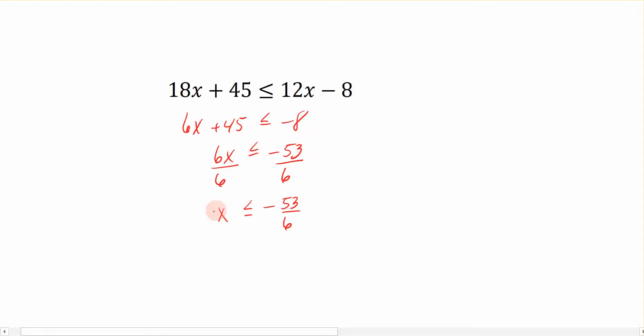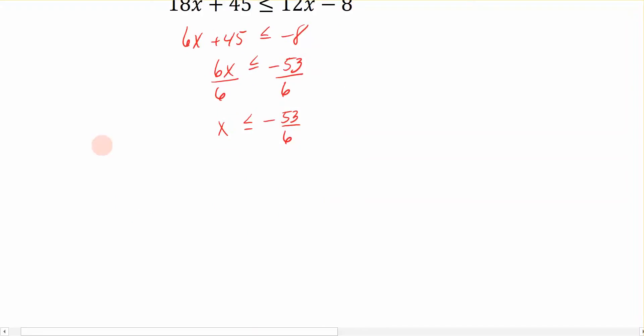Okay, so now that we have a solution here, let's go graph this. This says that I'm looking for solutions for the variable x that are less than or equal to negative 53 over 6. Always start by reading with your variable first. So the only number I'm really interested in is negative 53 over 6. And I know that I want values that are less than, so they would be less than.